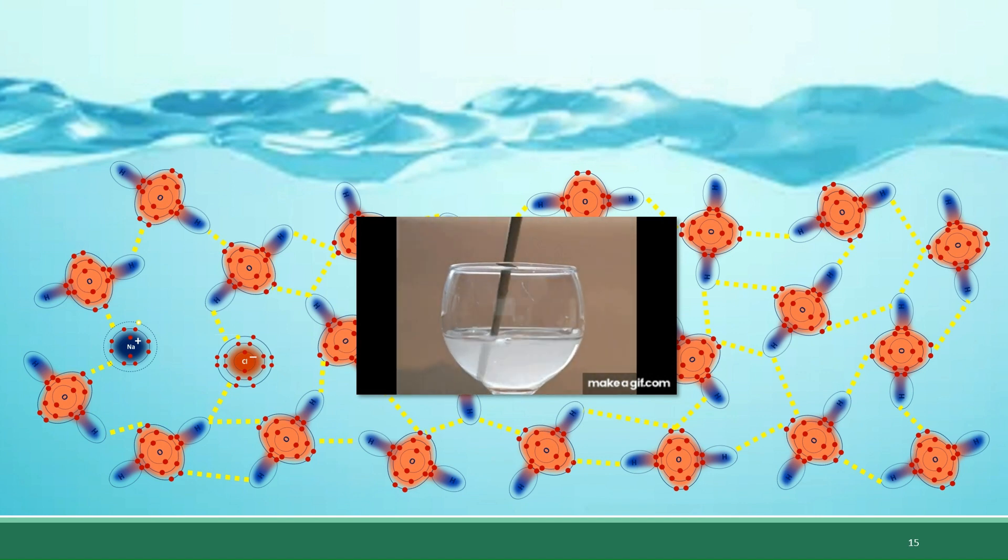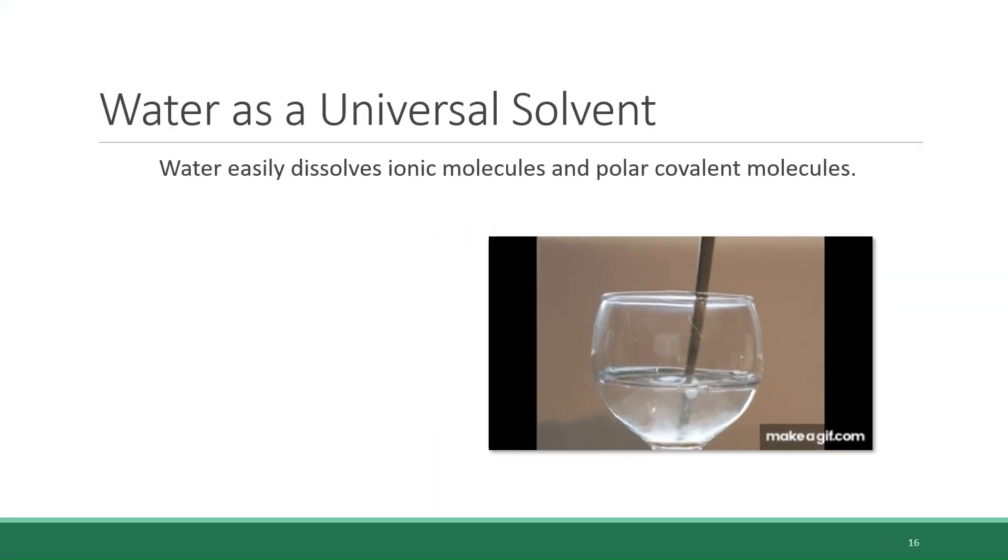Stir it up and watch it disappear and become homogenous within the water. The salt molecules are being pulled apart by the water and the ions that make them up are fully dissolving in it. So water is a very good chemical at dissolving things as long as they are ionic or as long as they are polar, just like water is.